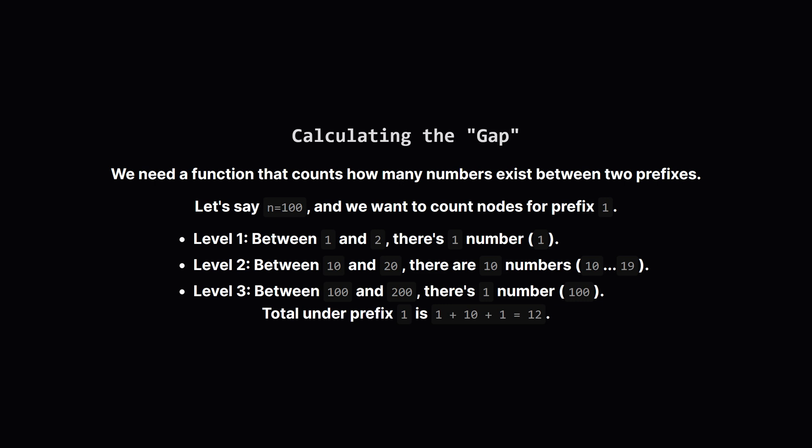At the next level, we look at numbers from 10 up to 20. All 10 of those, from 10 to 19, are less than or equal to our limit of 100. So we add 10 more. At the third level, we look from 100 up to 200. Only 100 itself is valid, so we add 1. In total, there are 12 numbers that start with the prefix 1.